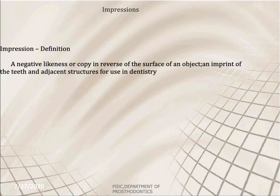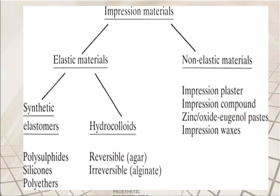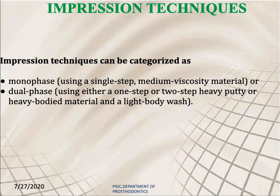Impressions are a negative likeness or copy in reverse of the surface of an object, and an imprint of the teeth and adjacent structures for use in dentistry. Impression materials can be classified as elastic materials and non-elastic materials. Elastic materials can be classified into synthetic elastomers and hydrocolloids. Impression techniques can be categorized as monophase or single step, and dual phase using either a one-step or two-step heavy putty or heavy-bodied and light-body wash.